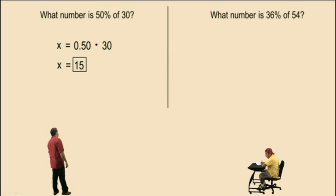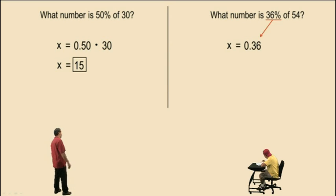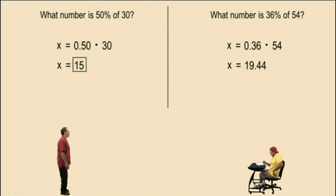Let's do another one. What number is 36% of 54? Again, what number? That's our unknown. We'll represent that with x. Is translates to equal. 36% translates into 36 hundredths, or 0.36. Of is multiplication. 54 is 54. And all we have to do is calculate 0.36 times 54. And Charlie, what did you get for that one? 19.44. Very nice there, Charlie. 19.44.